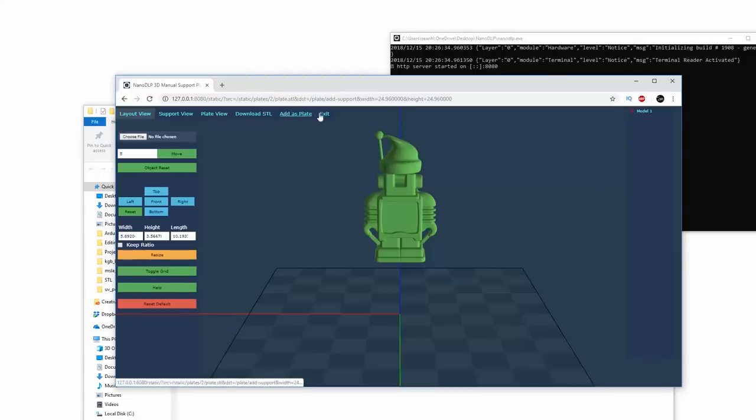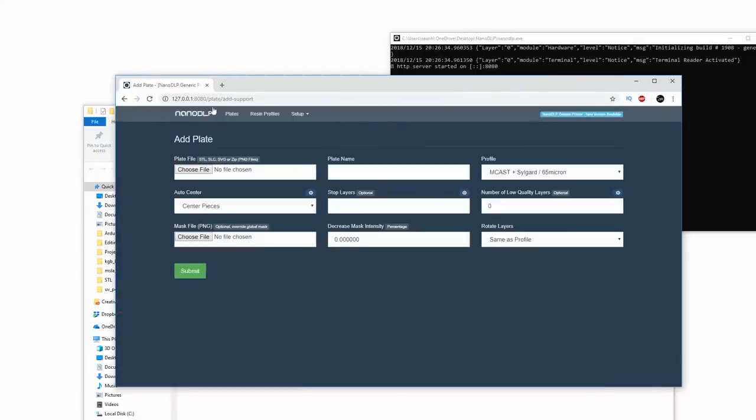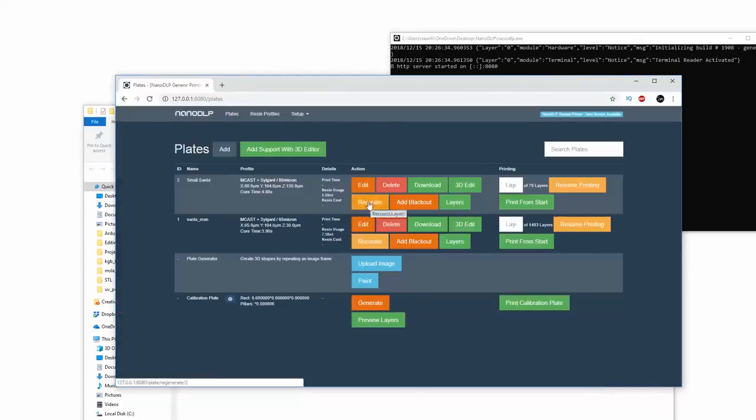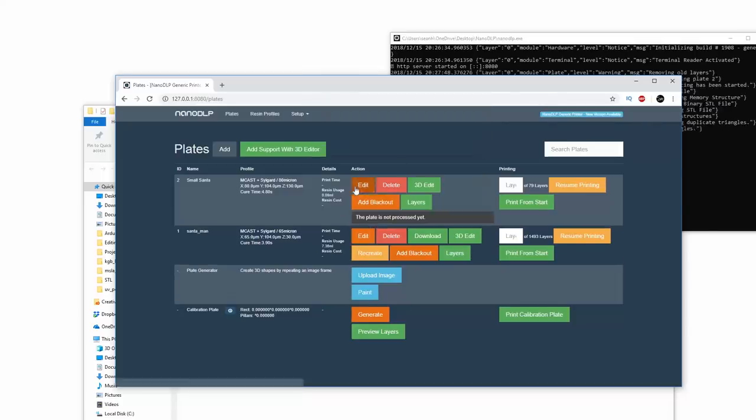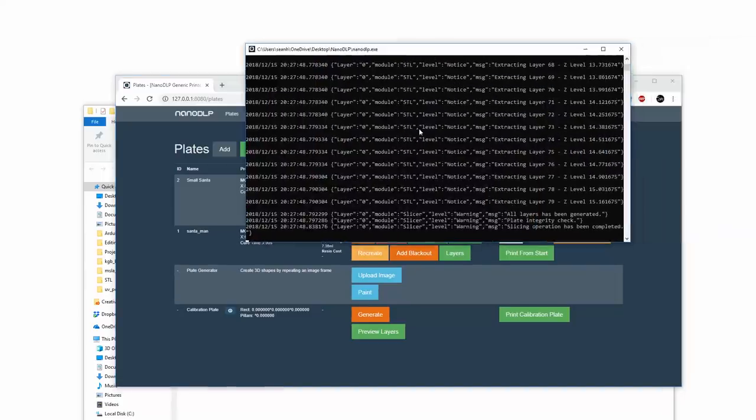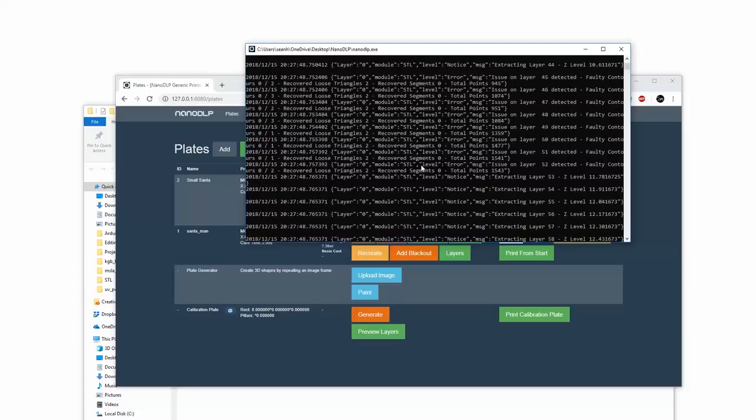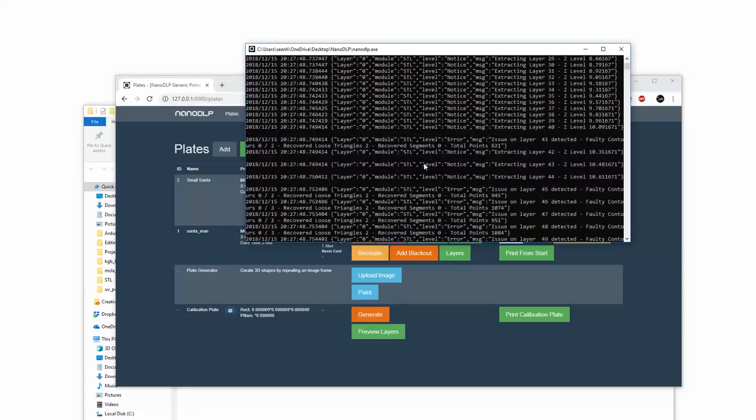So normally you do add as plate, we're just going to exit because we've already got it. We go to the plates, and we will create it. And basically what it just did was it created all the layers in an image file for the Santa.